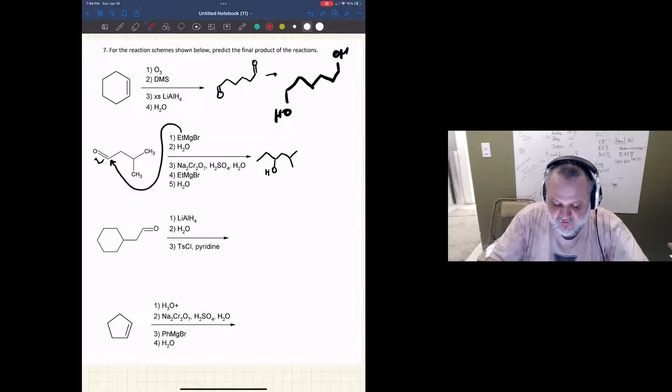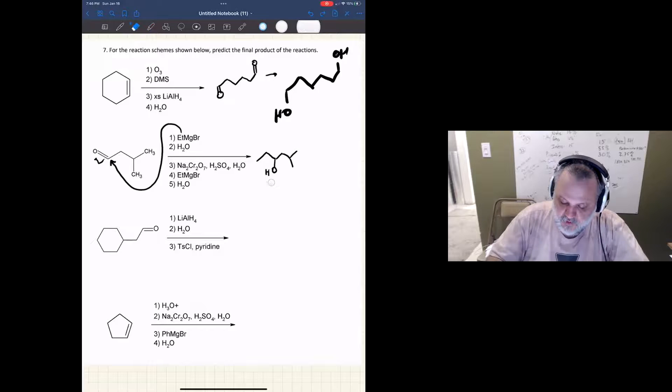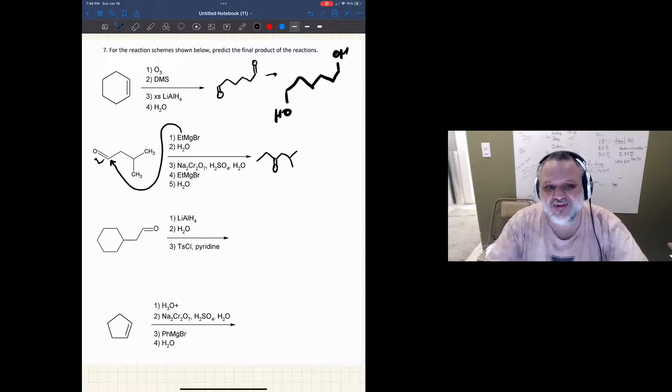Okay, then what's next? Sodium dichromate. So I'm going to oxidize that alcohol. I'm going to oxidize it as far as it can go because that's the strong oxidizing agent, but since it's not going to break any carbon-carbon bonds, then I'm only going to create the carbonyl group.